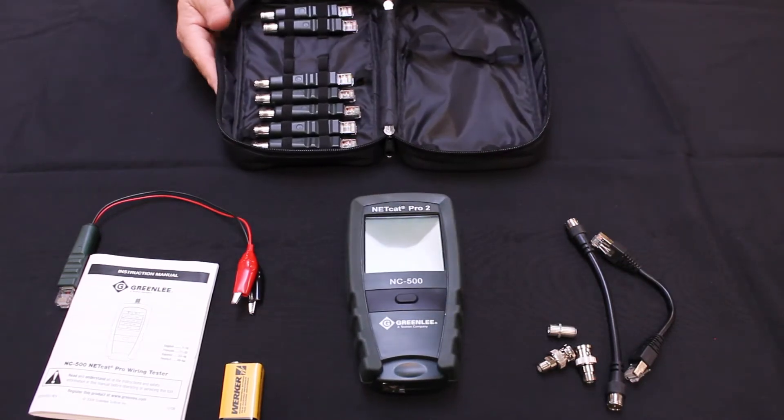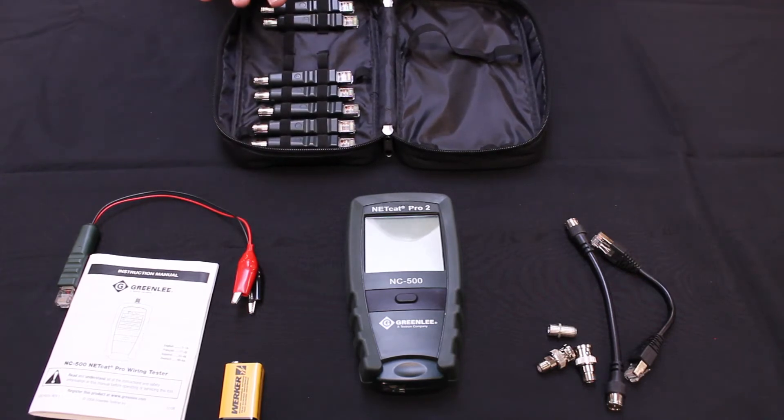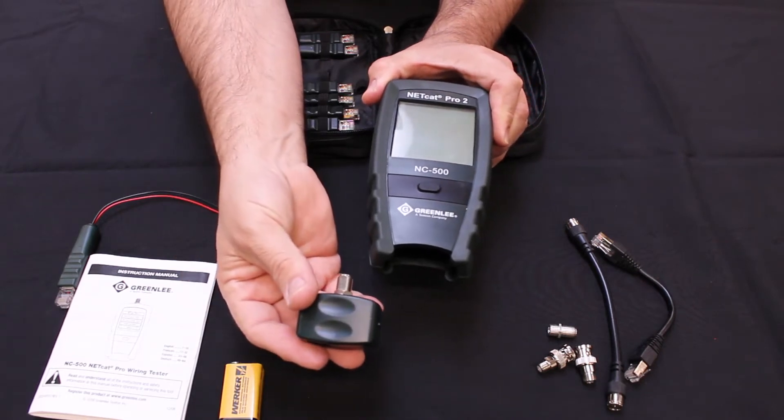An RJ45 to RJ45 patch cable, the NC500 test unit itself. Also within the kit, there are eight office identifiers, seven that are stored here in the soft case, and the number one identifier is stored in the bottom of the NC500 itself.